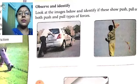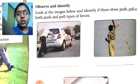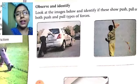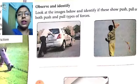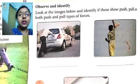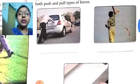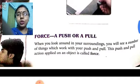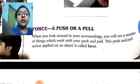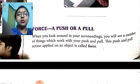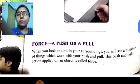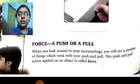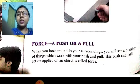But there are various cases in which both push and pull can take place. For example, flying a kite — in flying a kite, we not only pull the kite but also push the kite. So both pushing and pulling means that force is applied. Force is called a push or a pull. This push and pull action applied on an object is called force.